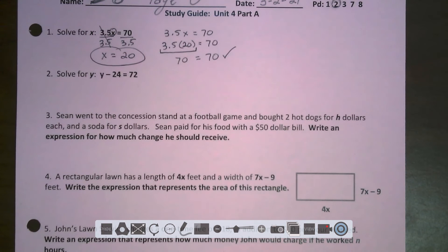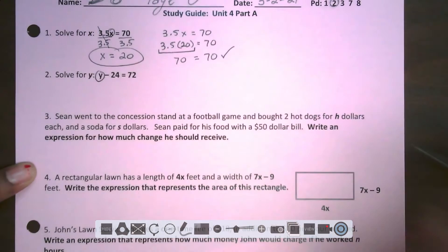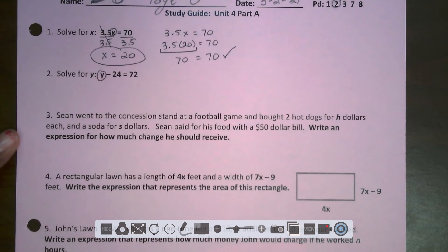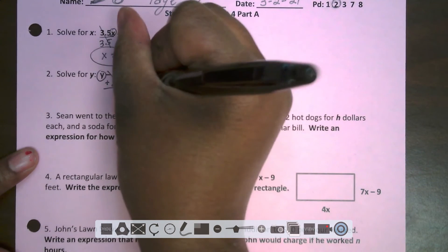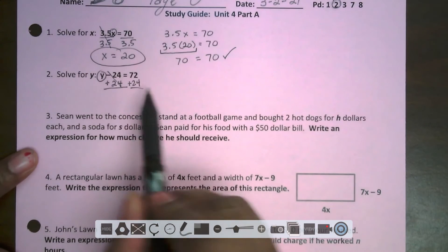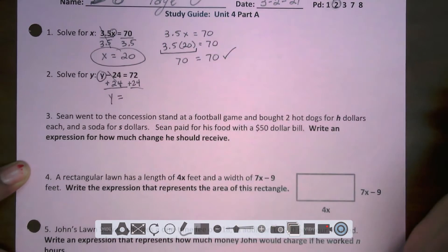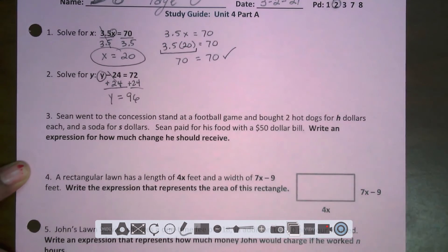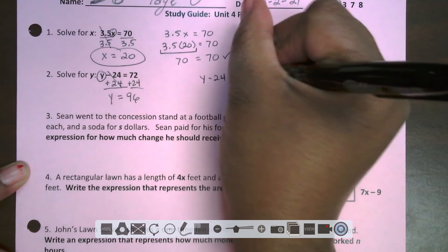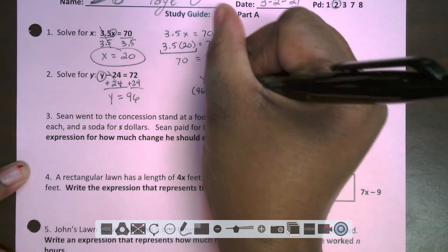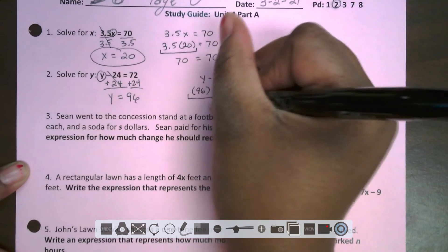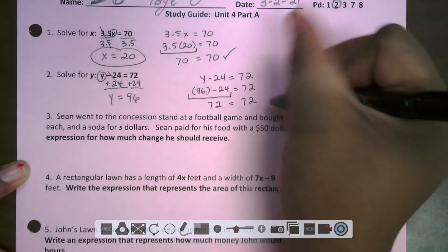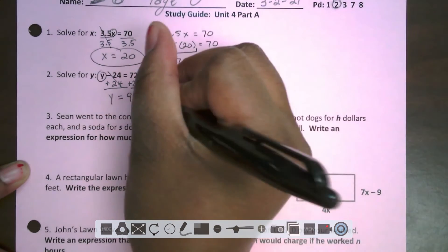Now it's time for number two. Y minus 24 equals 72, and it wants us to solve for y. I'm going to circle my variable. What's being done to it? It's being subtracted by 24, and the inverse of subtracting 24 is to add 24 on both sides. Those 24s cancel out, and now I have only y left over here, and y equals 96. I'm going to check my work. Now I'm going to substitute in my 96 for y. 96 minus 24, that gives me 72. So 72 equals 72. That is indeed a balanced equation. So 96 is my y.